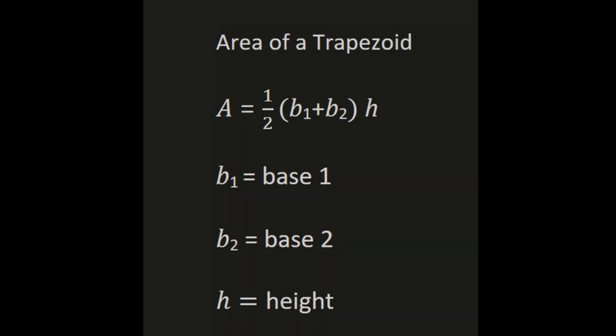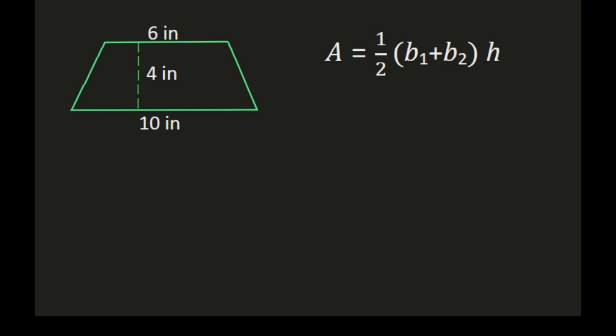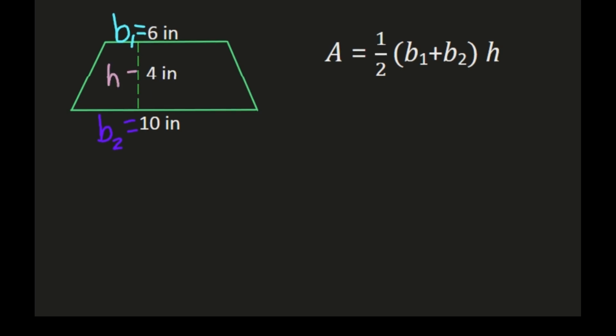Let's take a look at our examples. To solve for the area of a trapezoid we're going to use the formula: area equals one-half times the sum of our bases times the height, which means we need to label our bases in order to plug them into the formula. It doesn't matter which base you label as base one or base two. I usually label the top base as base one and the bottom as base two. So we'll use six inches for base one and ten inches for base two. The height is the perpendicular line between the bases — in this trapezoid that's the dashed line labeled four inches.